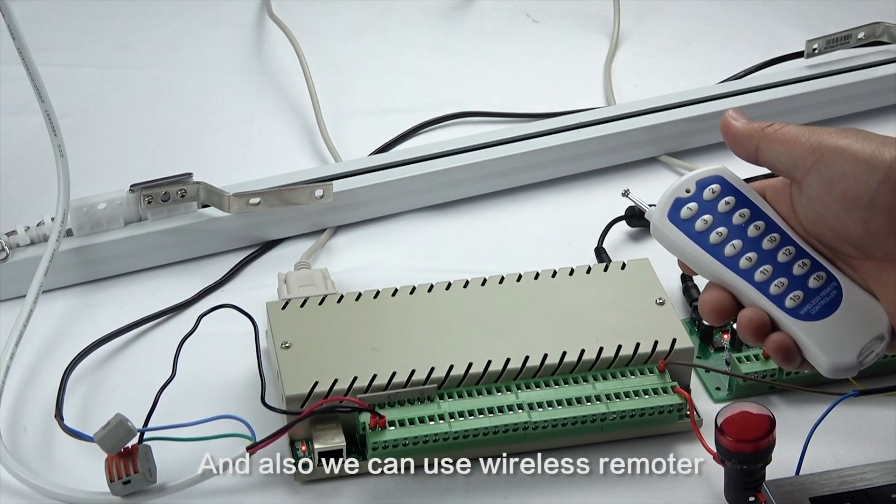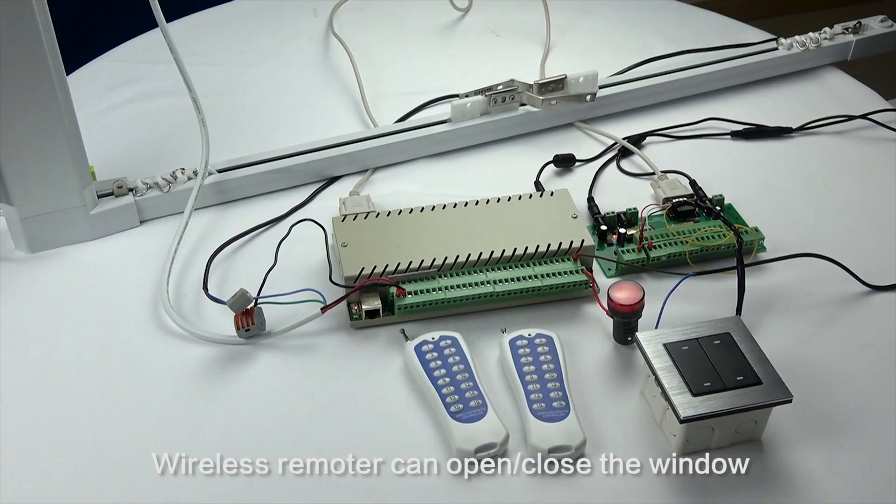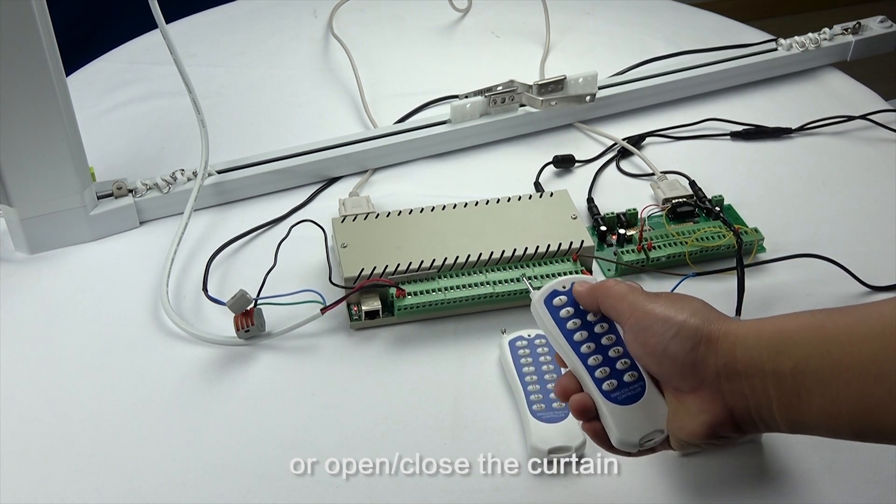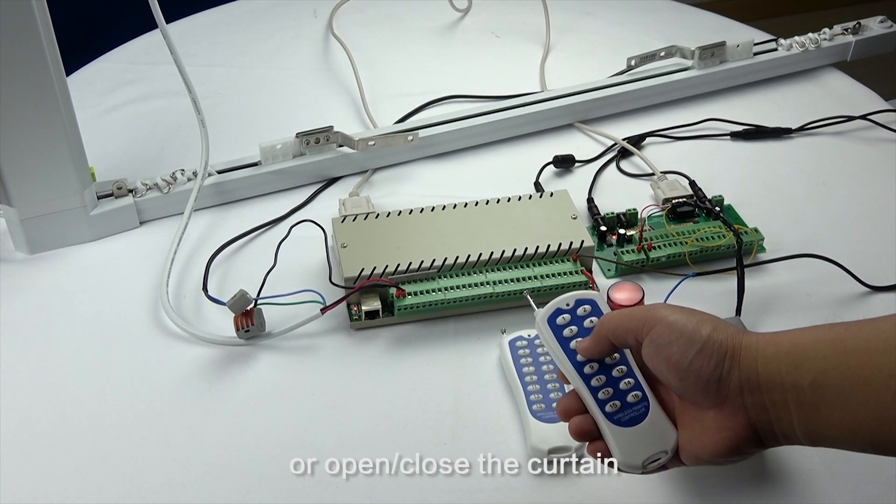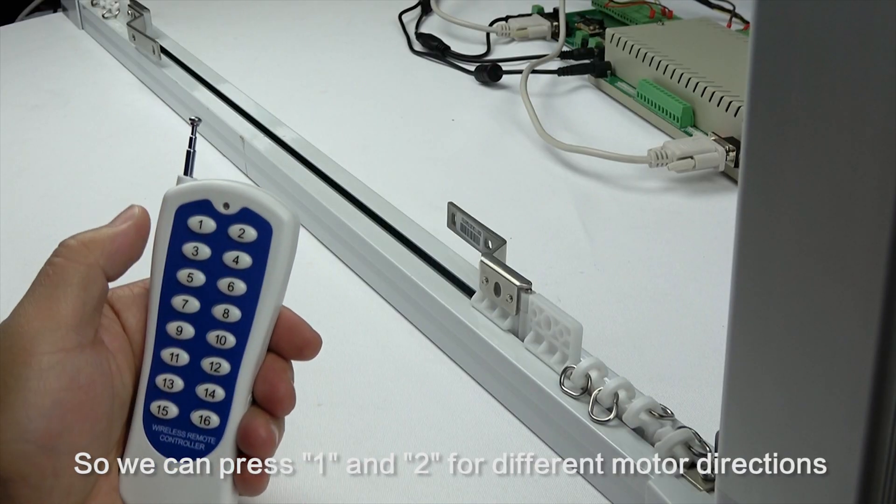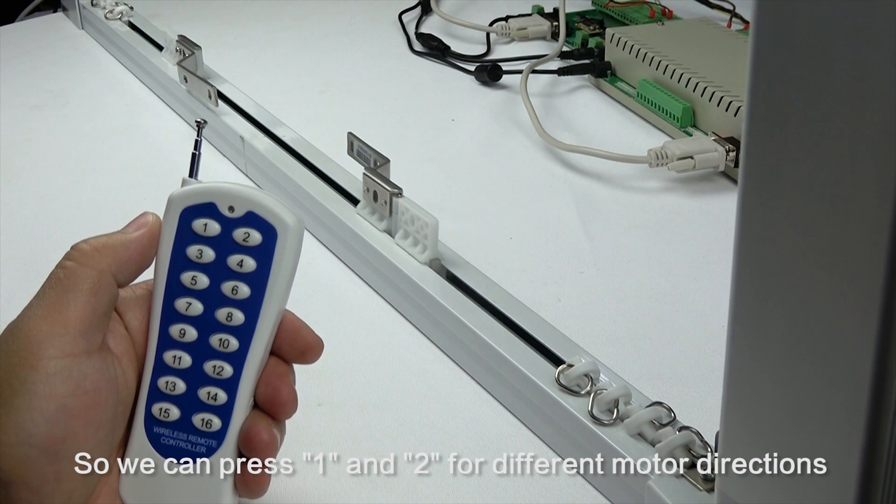We can also use the wireless remote to open and close windows or curtains. We can press button 1 or button 2 for different motor directions.